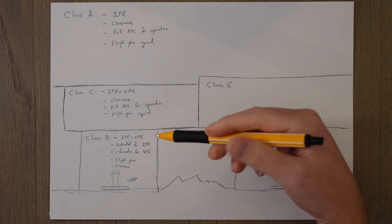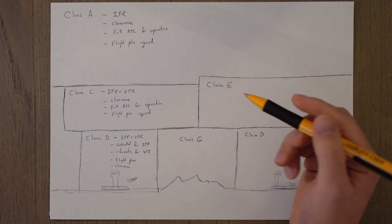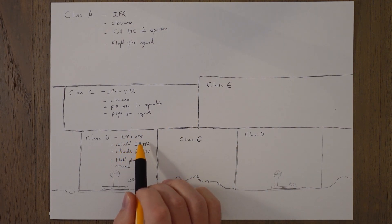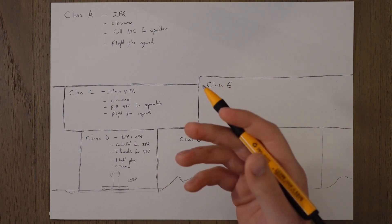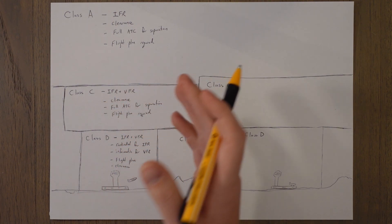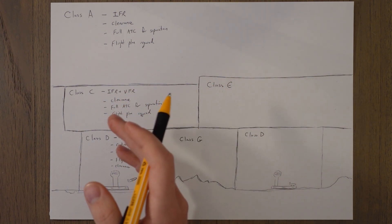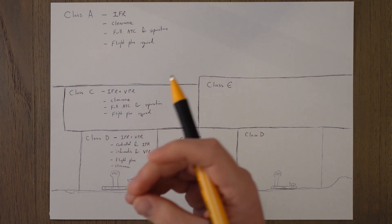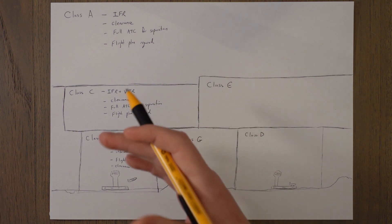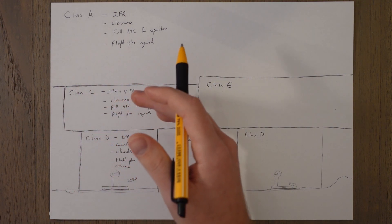Class D airspace is quite common around airports in the UK. There is IFR and VFR traffic allowed inside and clearance is required to enter into the airspace. Air traffic control provides a control service for IFR traffic and therefore will give separation between IFR and other IFR traffic and also between something called special VFR, which is another classification of VFR to fly in reduced weather conditions which you'll learn more about in the air law.